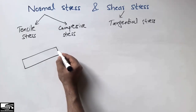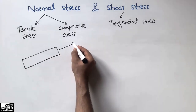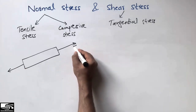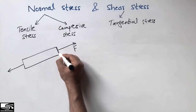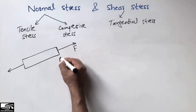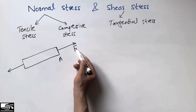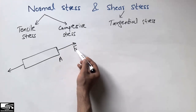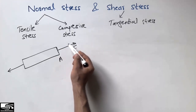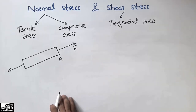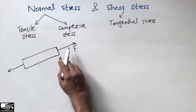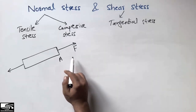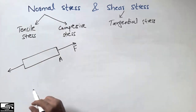...if I apply a force perpendicular to the area — so this is my applied force and this is the surface area of the member — the force is perpendicular to the area, so this stress is known as normal stress, because the force is perpendicular to this area.